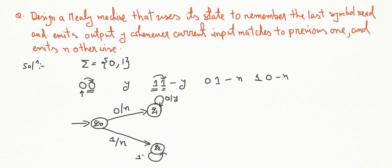Suppose we read 0 here, then output will be N. And suppose here we read 1, then output will be N. In this way we have designed the Mealy machine.